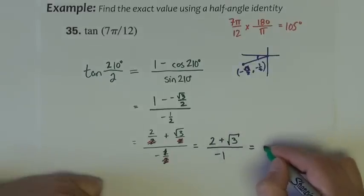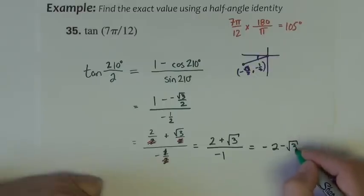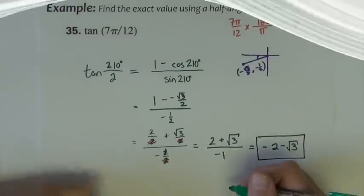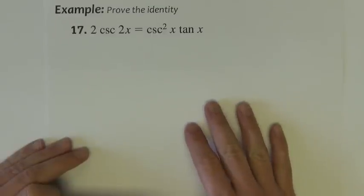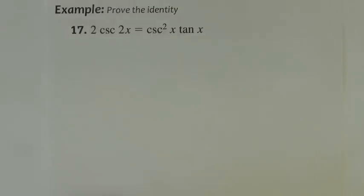The result is 2 plus square root of 3 over negative 1, which would be the same as negative 2 minus square root of 3. I want to skip the next example in your notes and go right to the last three here that involve proving identities.